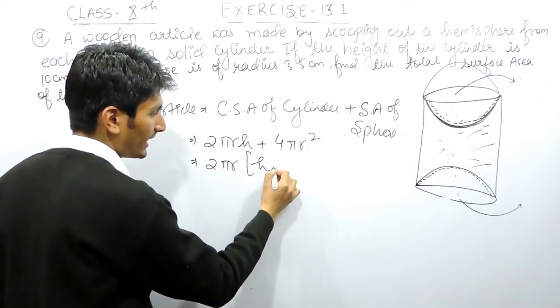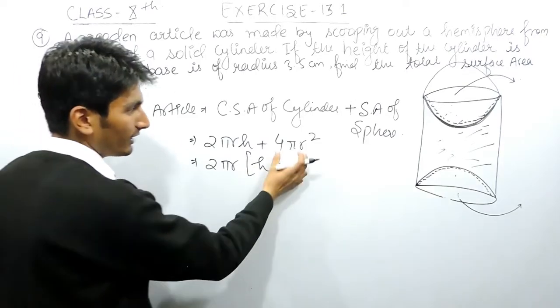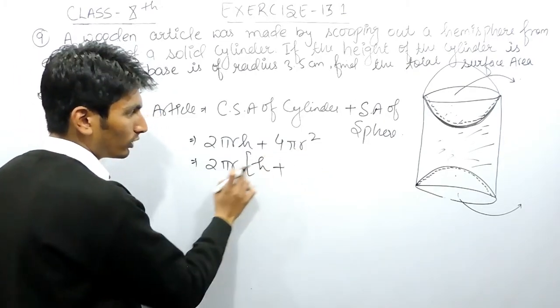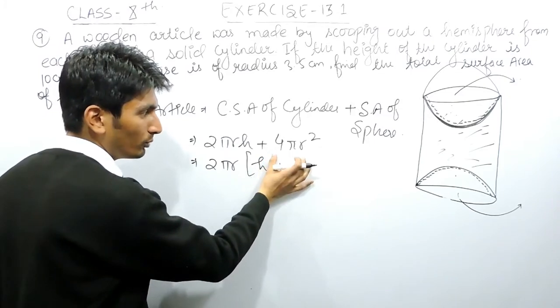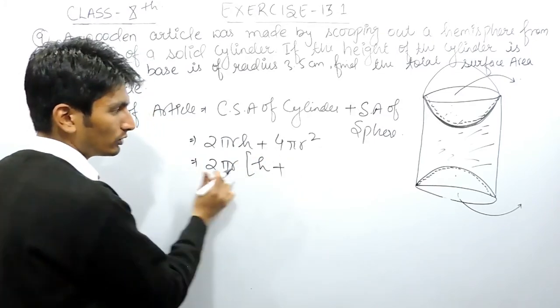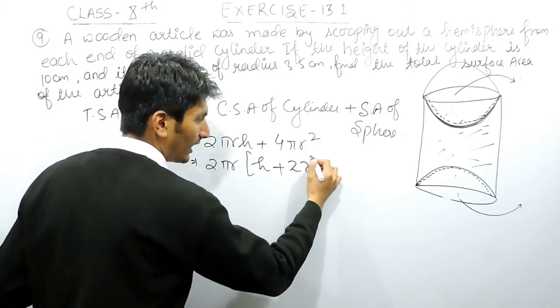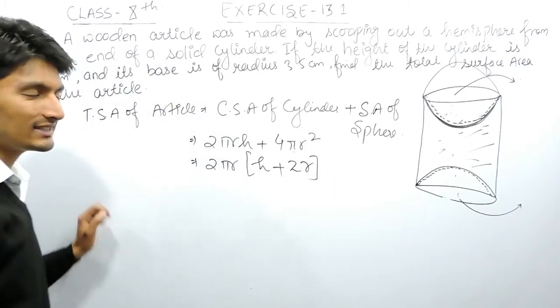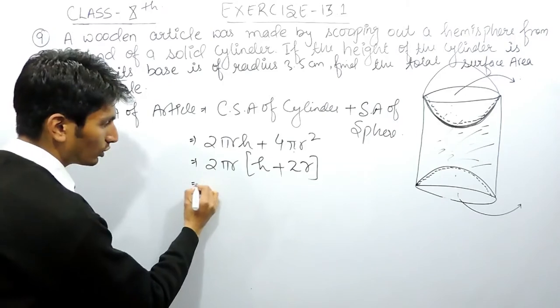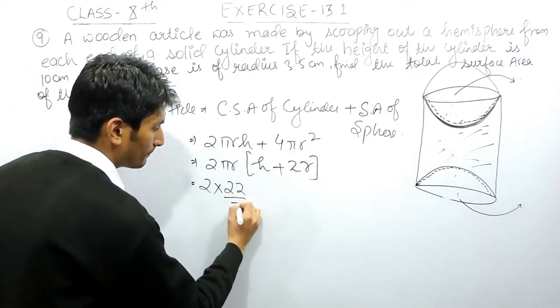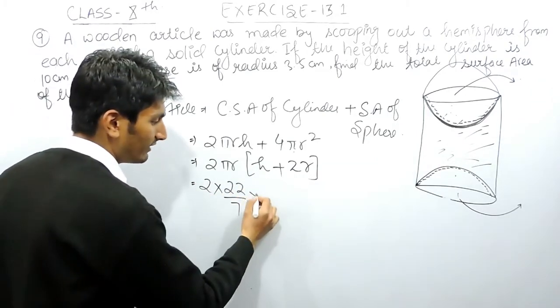And from this expression, 2πr is taken out. Only h will remain inside the bracket. And from this, four can be written as 2 multiplied by 2. And from 2 multiplied by 2, two is taken out. So only two will remain. Pi is taken out. And from 2r, one r is taken out. So only one r will remain inside the bracket.